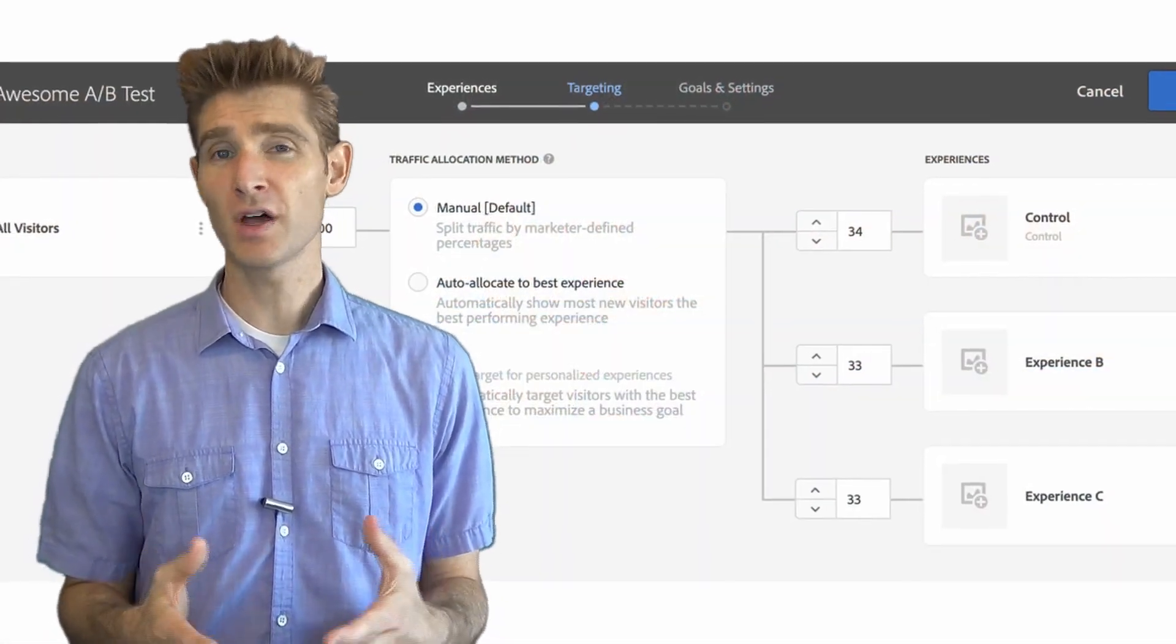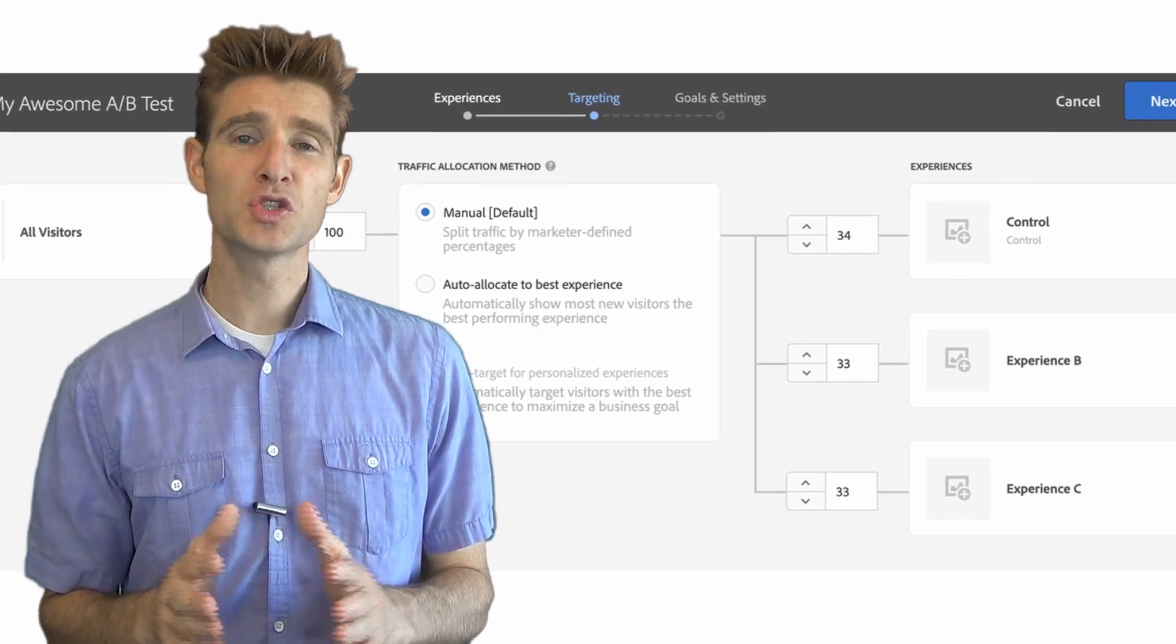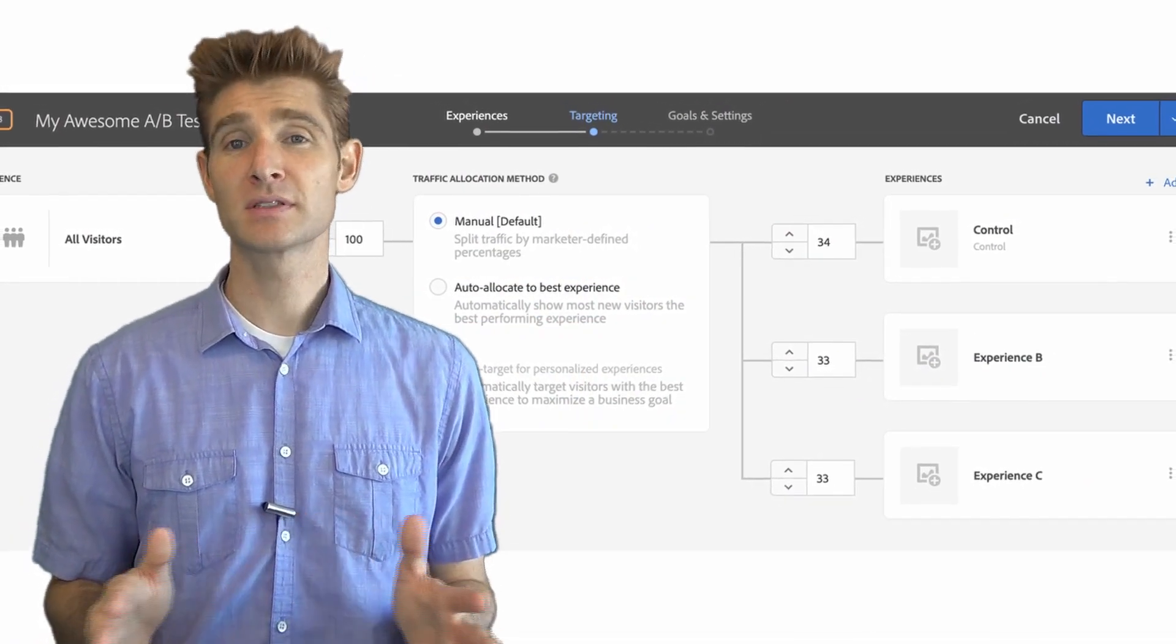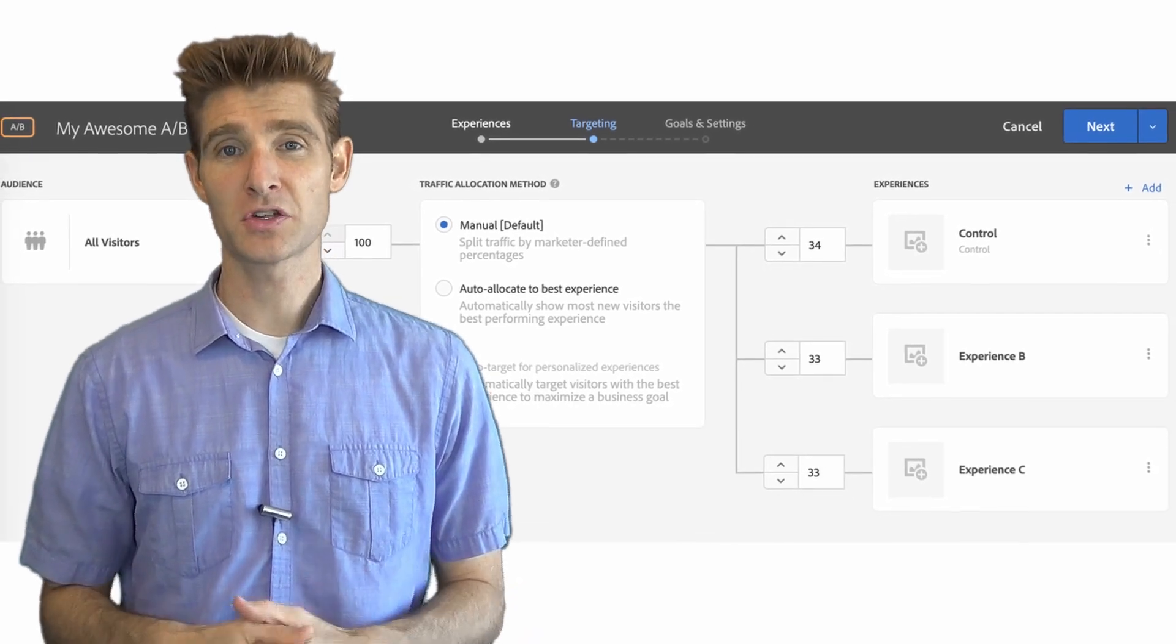When you're doing your A-B testing, you might be tempted to use the built-in features of all the testing tools that allow you to change the percent allocation of each variation and target different amounts of traffic per variation. Whenever you're tempted to lower the traffic amount, remember the traffic jam. Remember the feeling of being stuck in traffic and not going anywhere. Your testing program suffers the same way as being stuck in a traffic jam when you reduce the traffic allocation per variation.